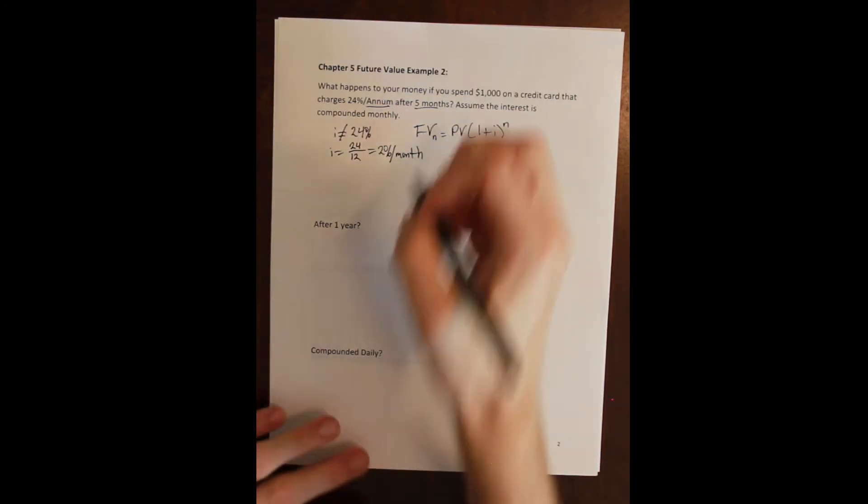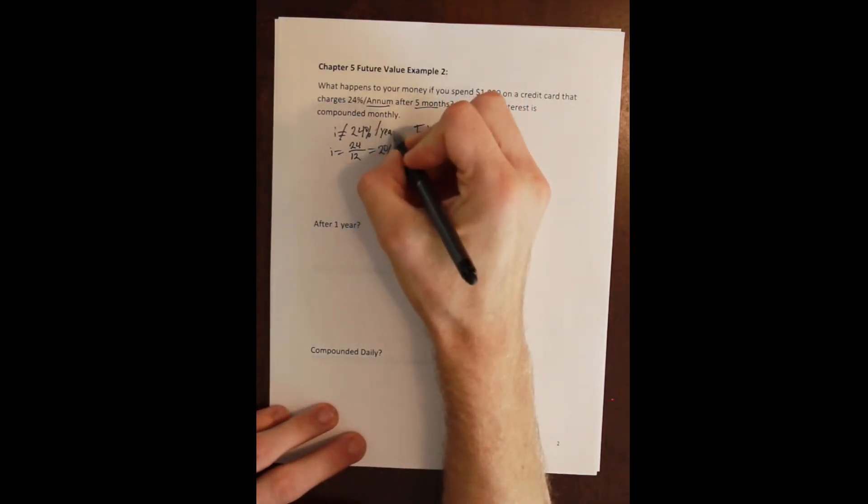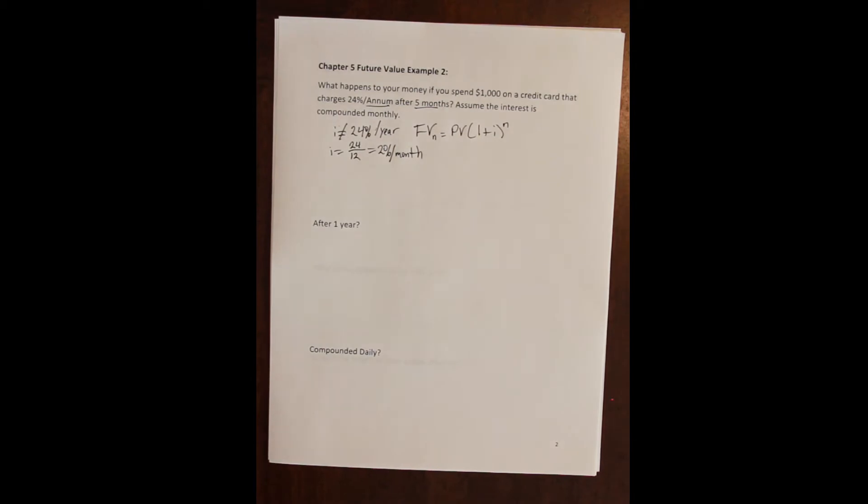So we need to go from 24% per year to 2% per month. And if we were looking for a daily rate we would simply be dividing the annual rate by the number of days in a year, or the number of quarters in a year if we wanted the quarterly rate. What we're doing is adjusting the given rate, what's often called the stated rate, and we'll talk about that in the lecture, to the actual rate, the compounded rate.